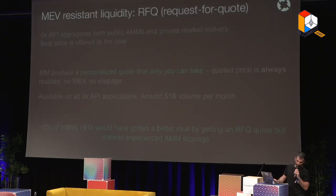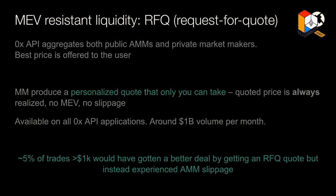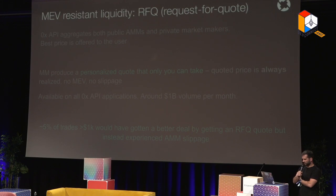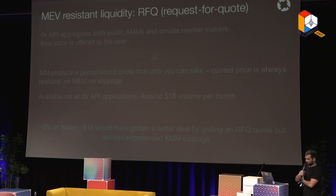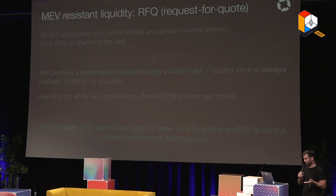The good news is there's a liquidity source called RFQ — Request for Quote — that is MEV-resistant. 0x API aggregates both AMMs and RFQ, connecting directly to private market makers and always offering the best price to users. RFQ produces a quote personalized just for you at that moment — only you can take it, so there's no slippage and no one can front-run you. It's available on all 0x API applications and we're already trafficking over one billion dollars in volume per month.